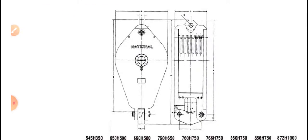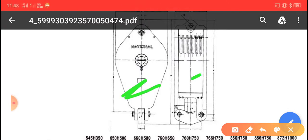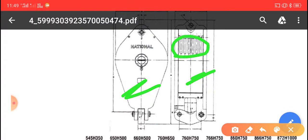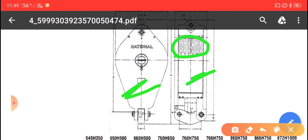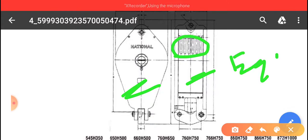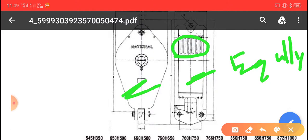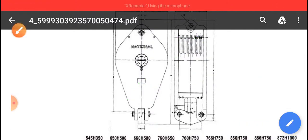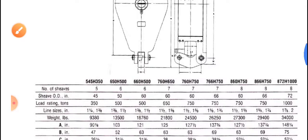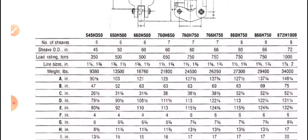Here you can see the standard type of traveling block in front view and side view. At the top, sheaves are available which divide and equally share the entire load among however many sheaves are provided. At the bottom is the hook where the load is attached to the traveling block.